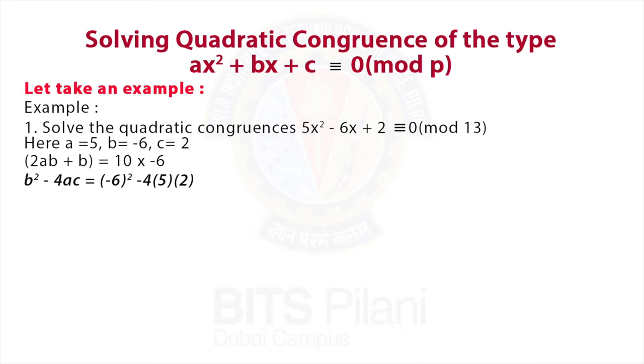The Legendre symbol (9/13) = 1, so the solution exists. And one solution of the congruence is 3. The other solution will be 13 - 3 which is 10.